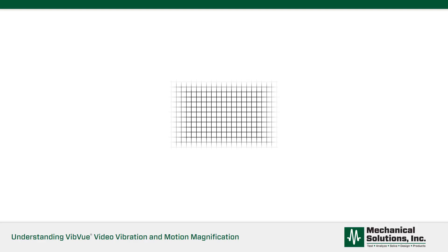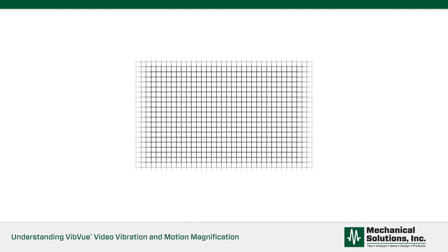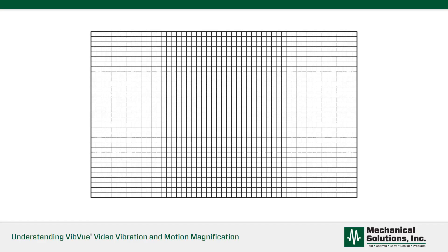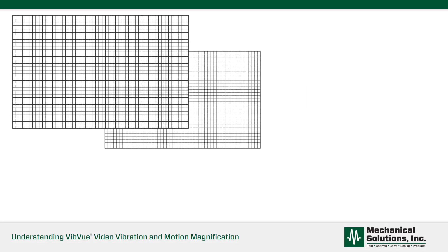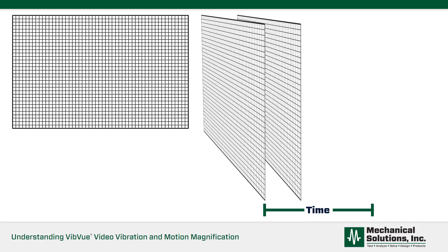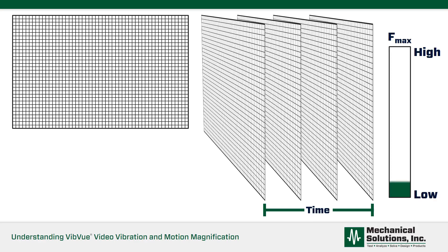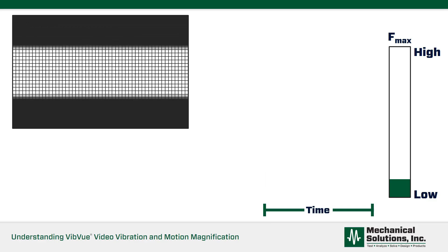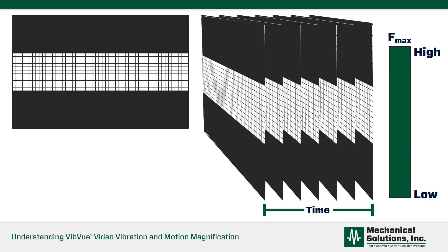Every camera has a fixed number of pixels, but the camera system itself has limitations on how many pixels it can process in a given amount of time. If you want to see more pixels, the camera system demands a slower frame rate. However, if you want a faster frame rate, the camera system must process fewer pixels.